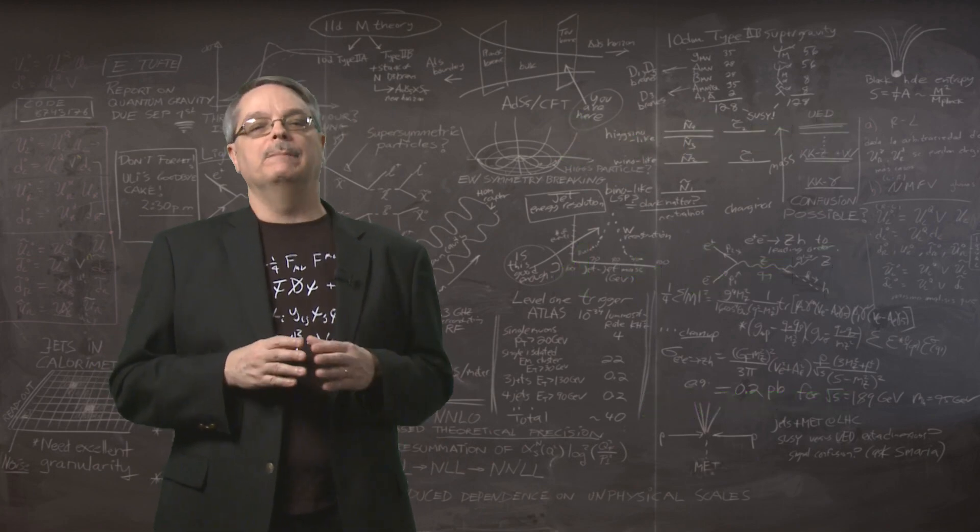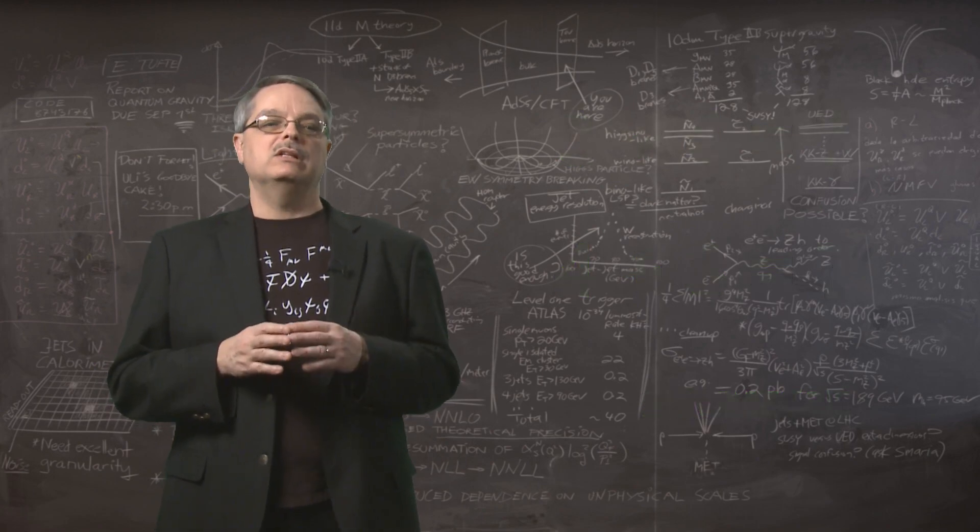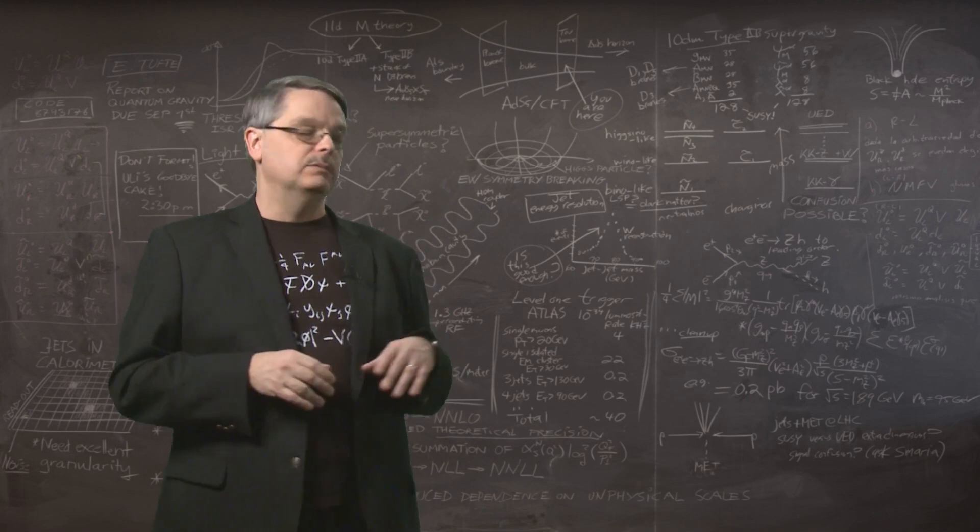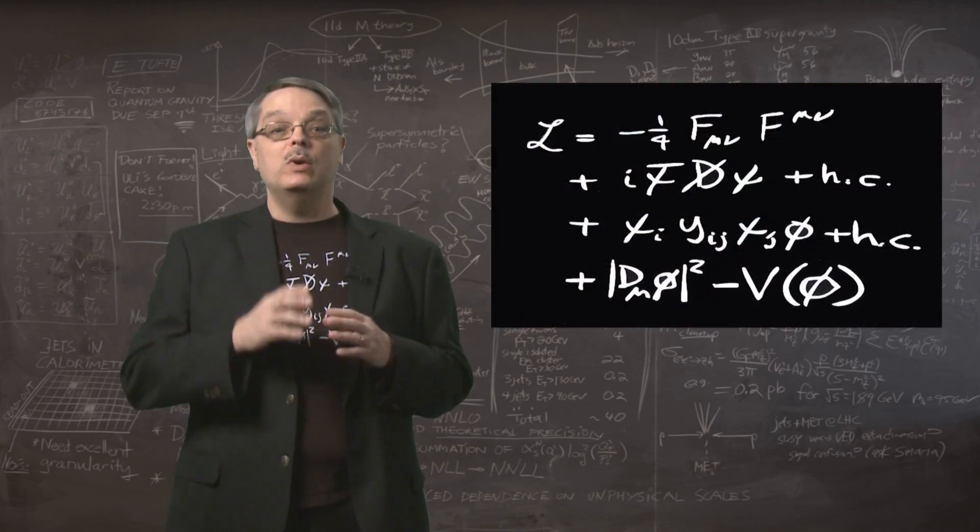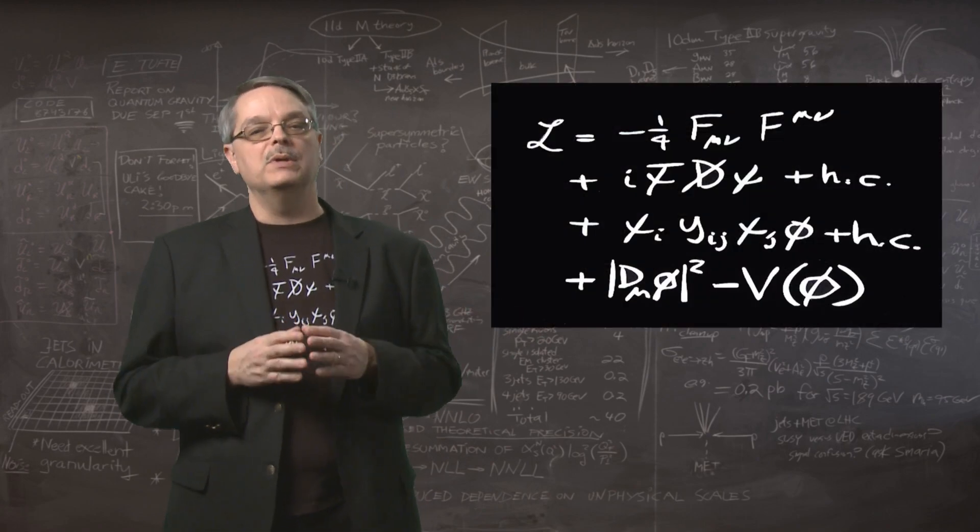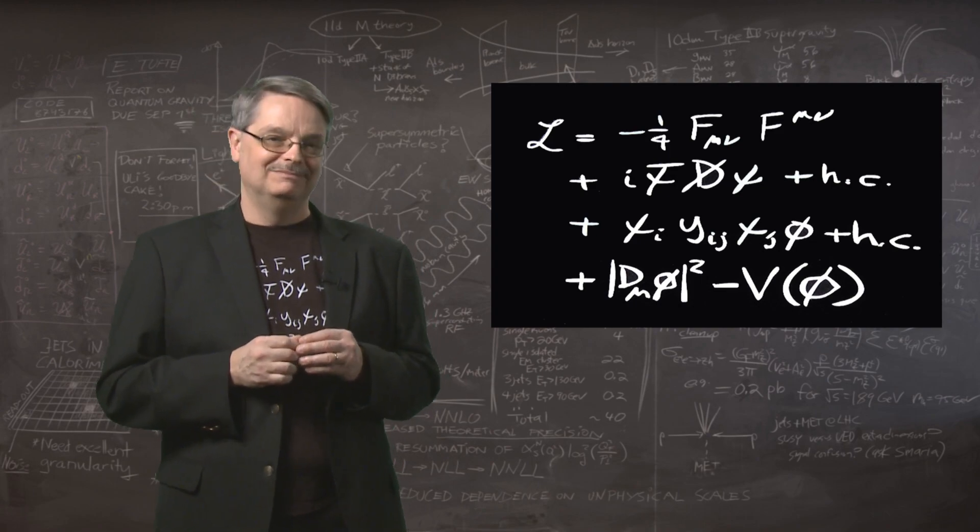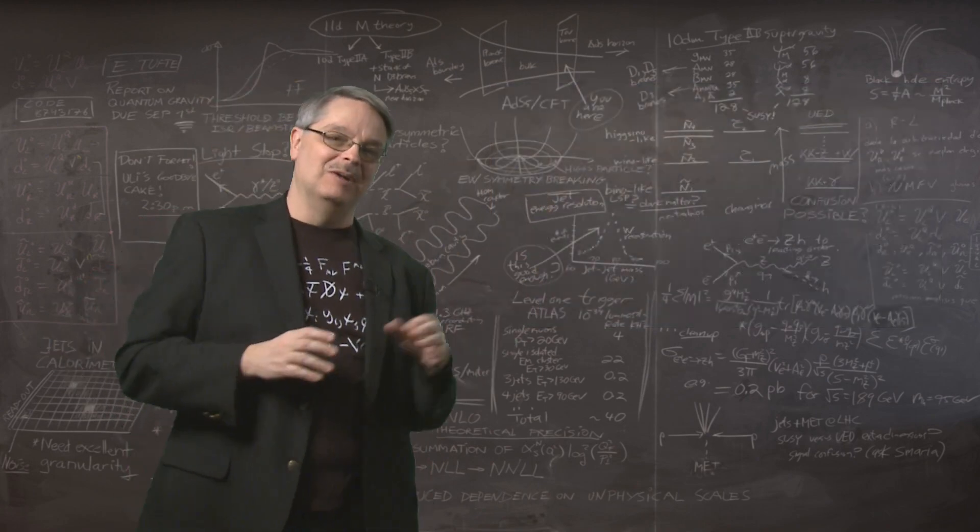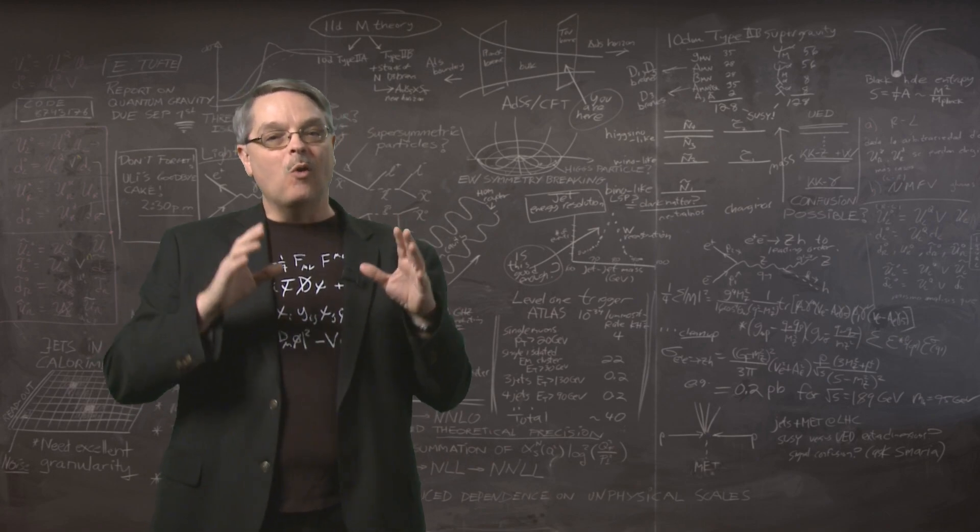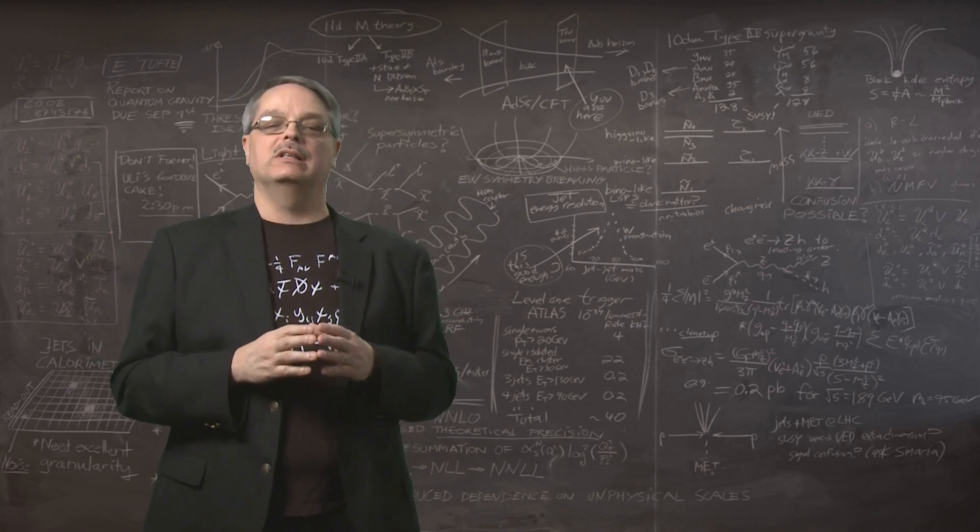In particle physics, we use much more complicated equations. So let's take a look at the standard model equation shown here. This equation governs the behavior of particles called fermions and bosons. Okay, I was just kidding. That's too complicated. We can understand supersymmetry using only the important features of the standard model equation.